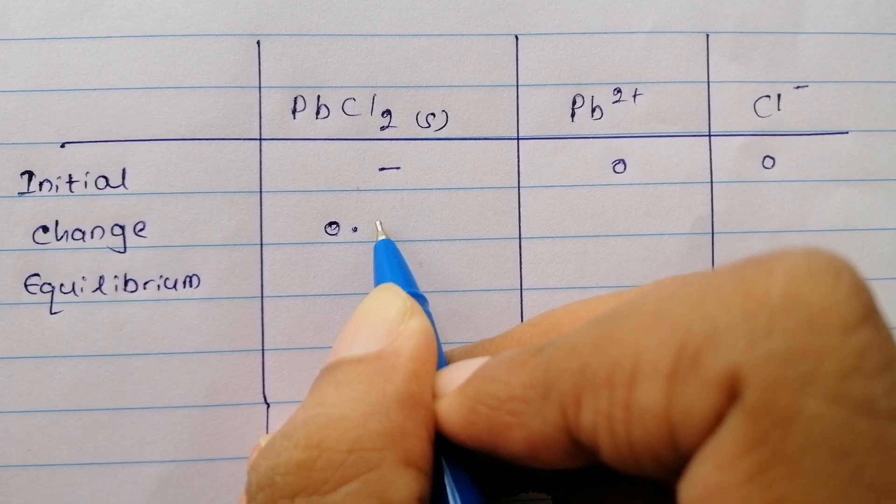We dissolve the lead chloride into lead two-plus ions and chloride ions. The initial concentration of lead two-plus and chloride starts at zero.